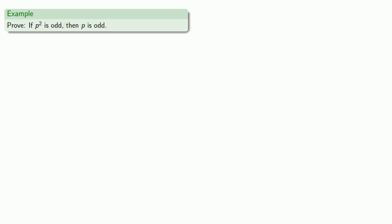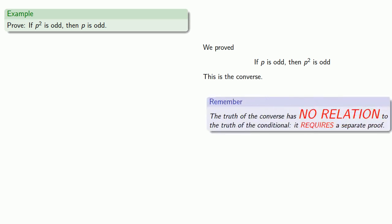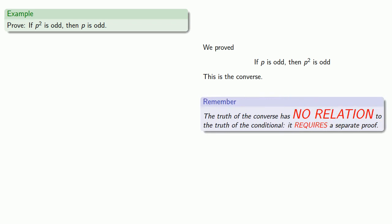How about proving that if p² is odd, then p is odd? Now it seems like this should be pretty easy. We just proved that if p is odd, then p² is odd, and this is the converse. But remember, the truth of the converse has no relation to the truth of the conditional. It requires a separate proof.